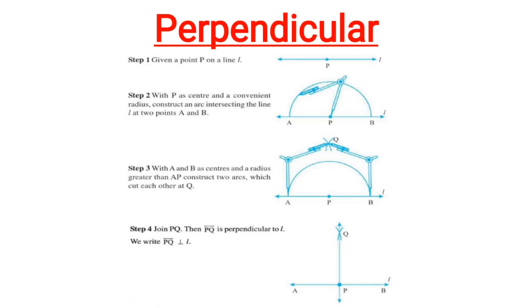Step 2: With P as center and a convenient radius, construct an arc intersecting the line L at two points A and B.